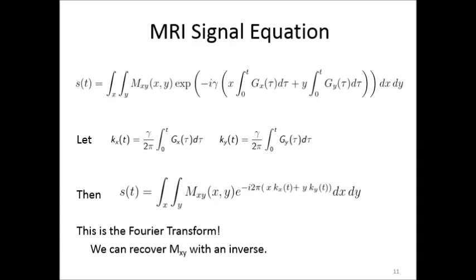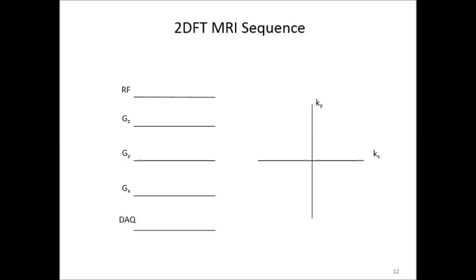Here is a 2D FT MRI sequence. Gz is put here for completeness, but it's outside the scope of this discussion. We start with an RF pulse, which performs excitation. And when we do that, we're probing the zero, zero location in the frequency domain. We then apply gradient fields, perhaps a positive gy and a negative gx. And we've moved our probe from zero, zero to some positive ky and some negative kx. We then apply a positive gx. And it's during this time that we perform data acquisition. What we've done is collected one line of data in the frequency domain.